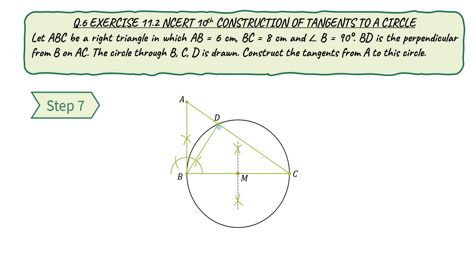Step 7. Draw line segment AM and draw its perpendicular bisector. Let N be the midpoint of AM. Step 8. By taking N as center and AN as radius, draw a circle.